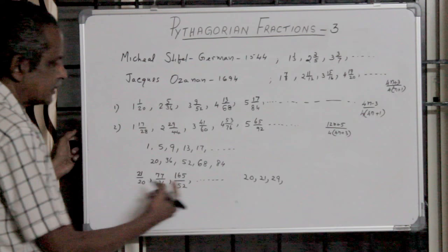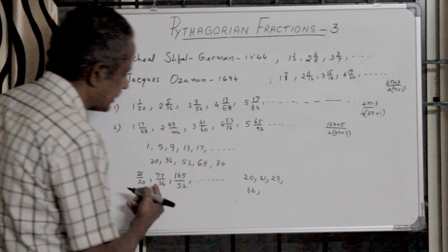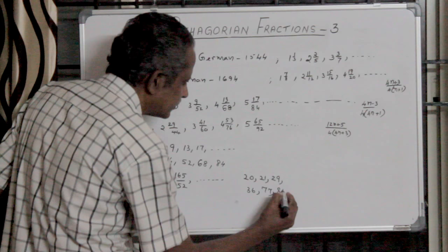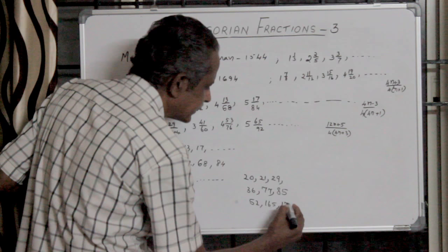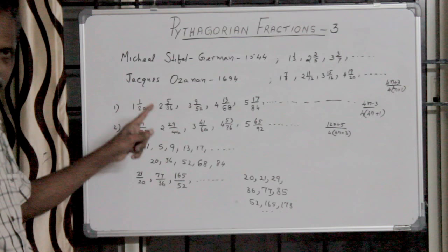Next one: 36, 77, then add 8, 85. In the next one: 52, 165, 165 plus 8, 173. These are the Pythagorean triples we get using this first sequence.